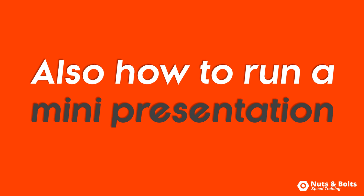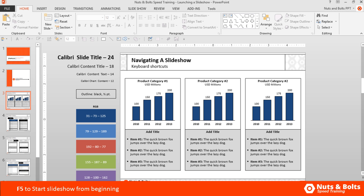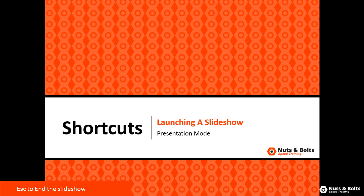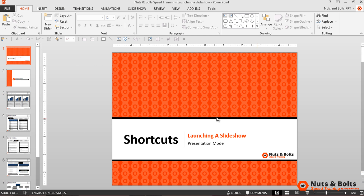Here in PowerPoint on slide number three, if I want to present my presentation in full screen mode I just hit F5 on my keyboard. F5 and the presentation starts from the very first slide. I hit Escape and I return back to the normal view — that's how to start a presentation from the beginning.